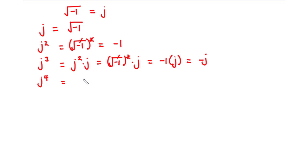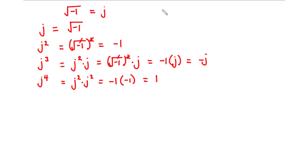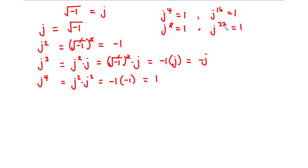j to the power 4 can be expressed as j squared times j squared. j squared equals negative 1, so we have negative 1 times negative 1, which equals 1. So j to the power 4 equals 1. Notice that j to the power of any multiple of 4 equals 1 — for example j⁴, j⁸, j¹⁶, and j³² all equal 1.